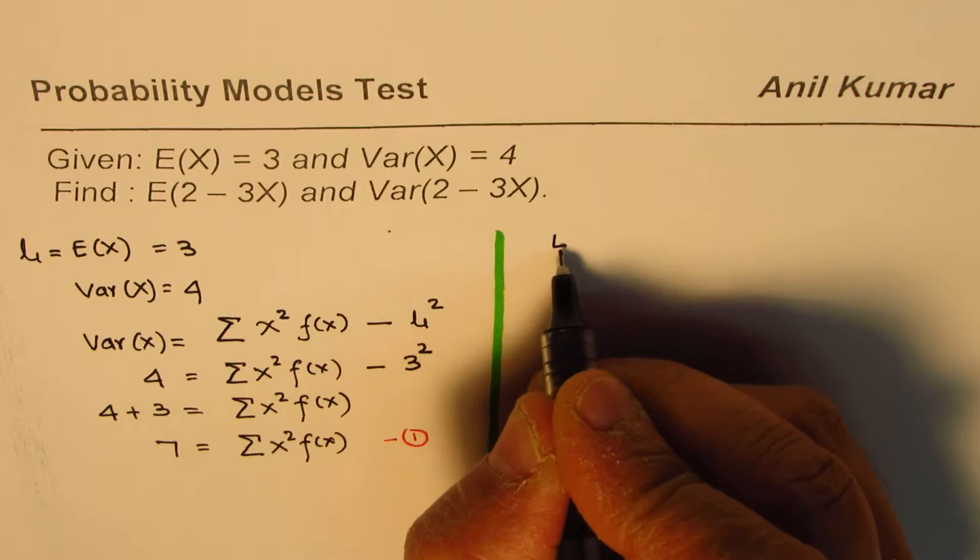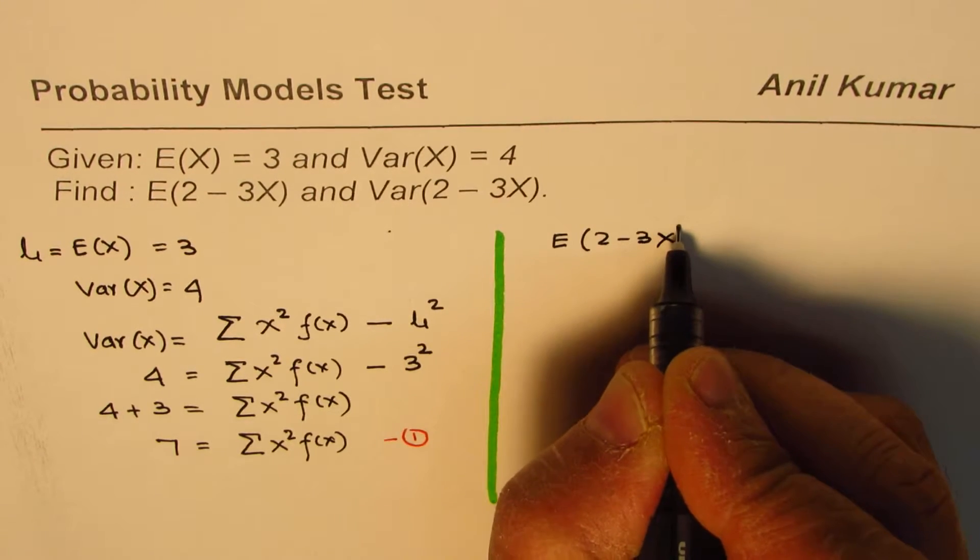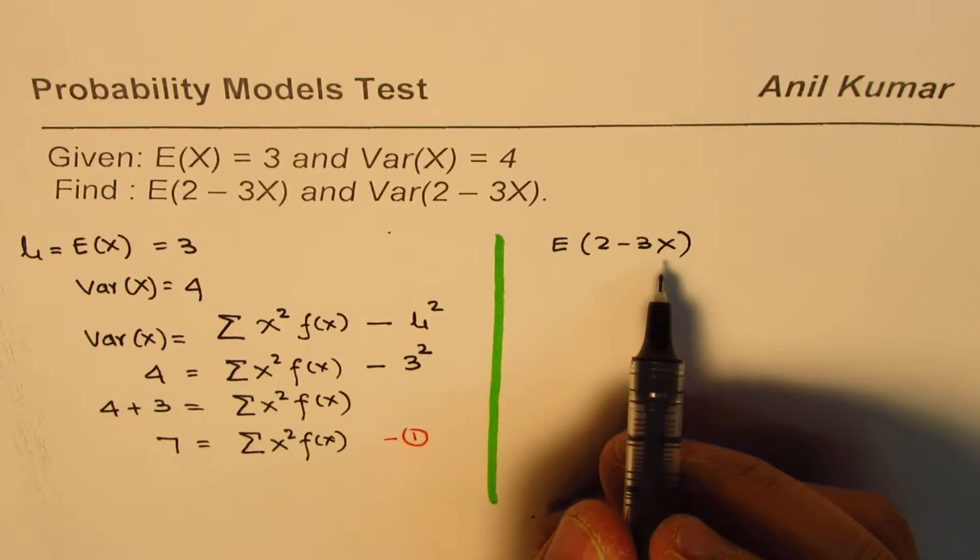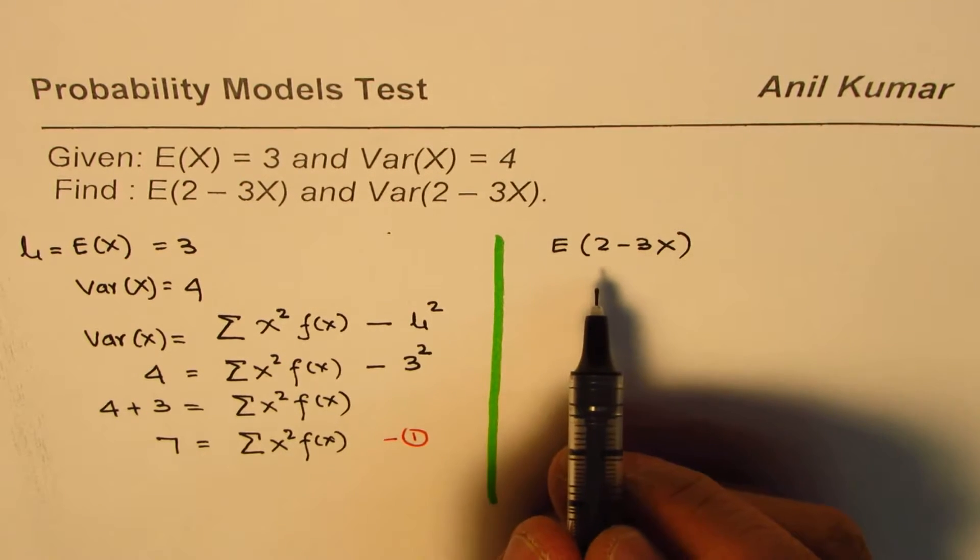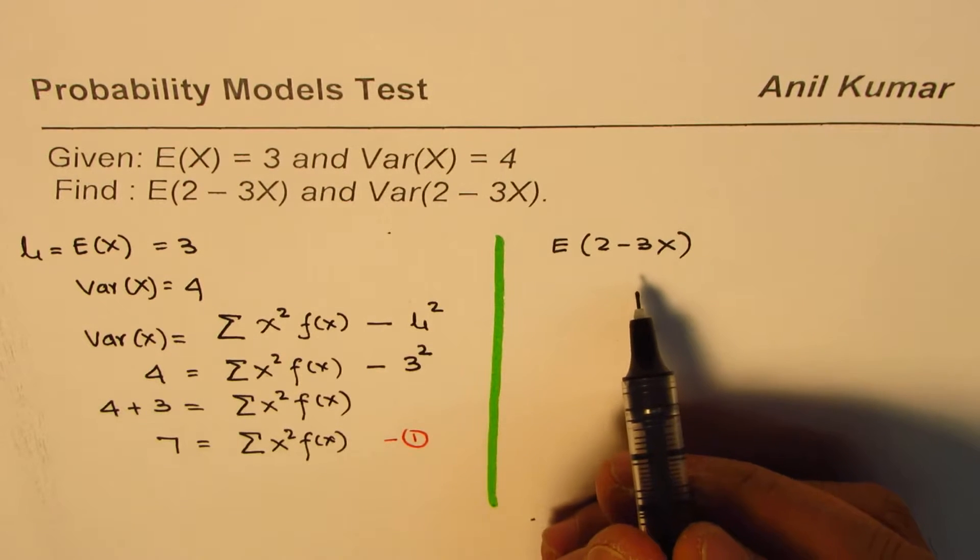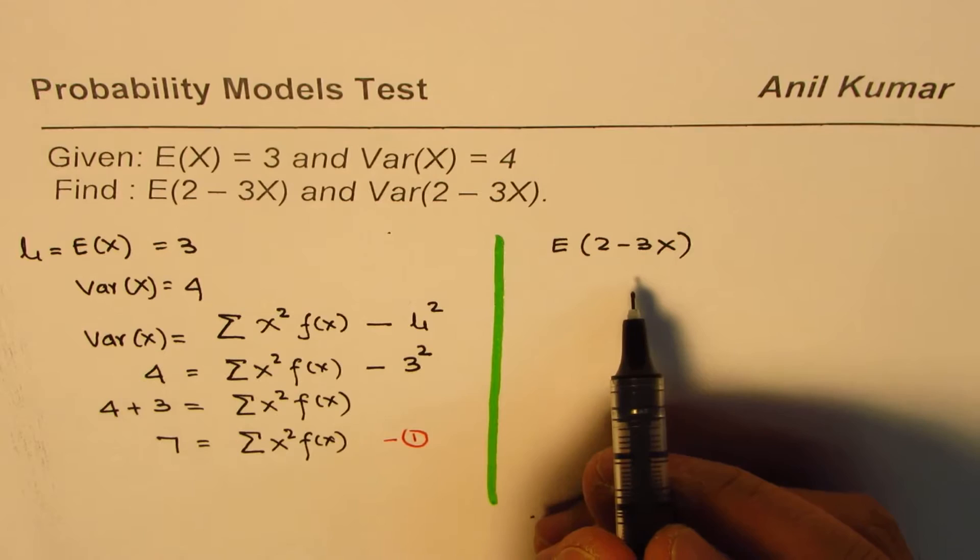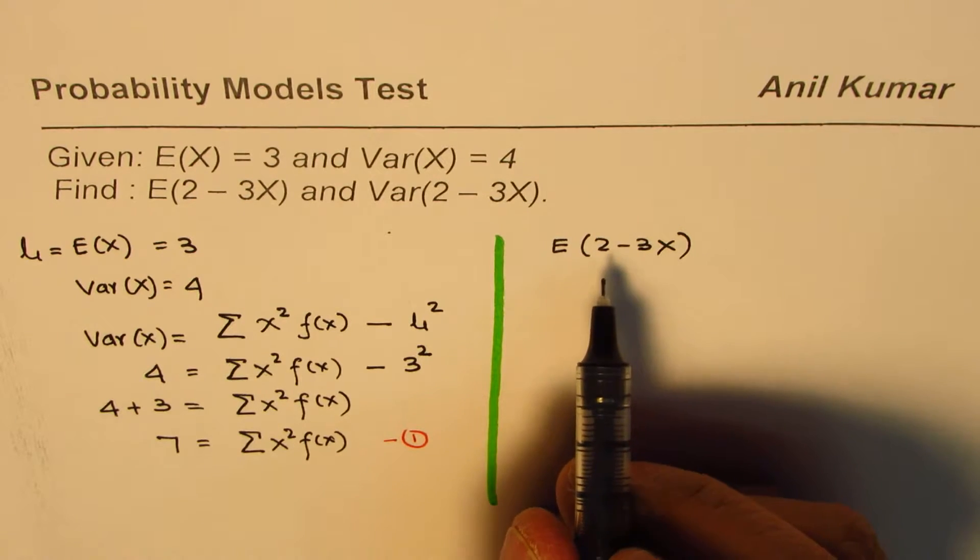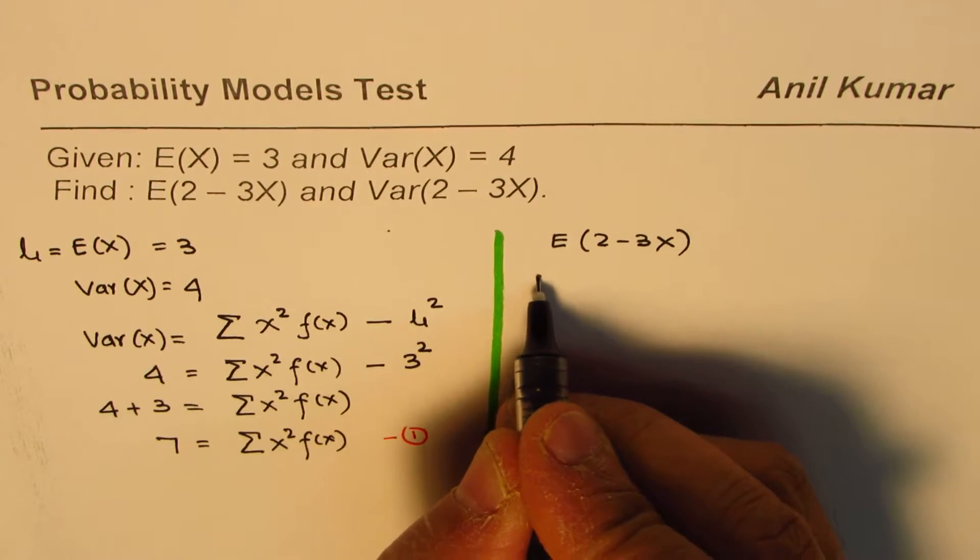So what is E of 2 minus 3x equals to? This is what we need to calculate first. In our case, we can substitute the value 3 for x and find the value.